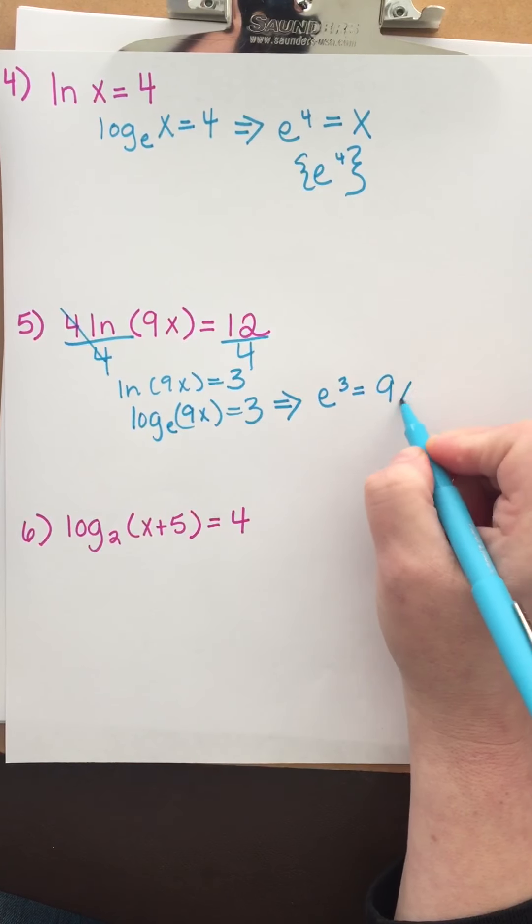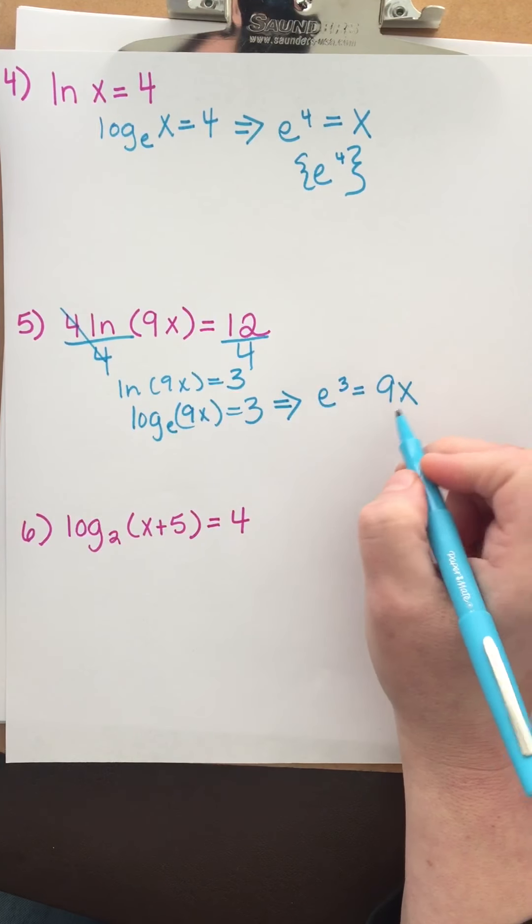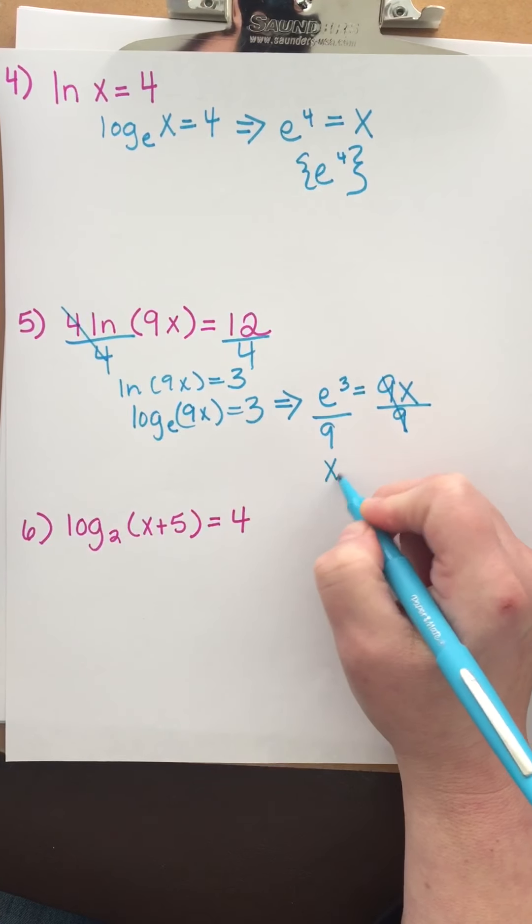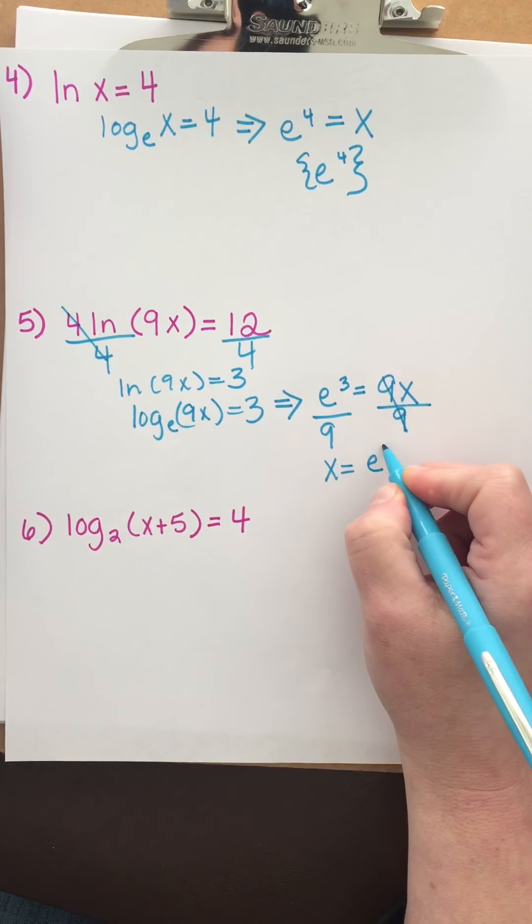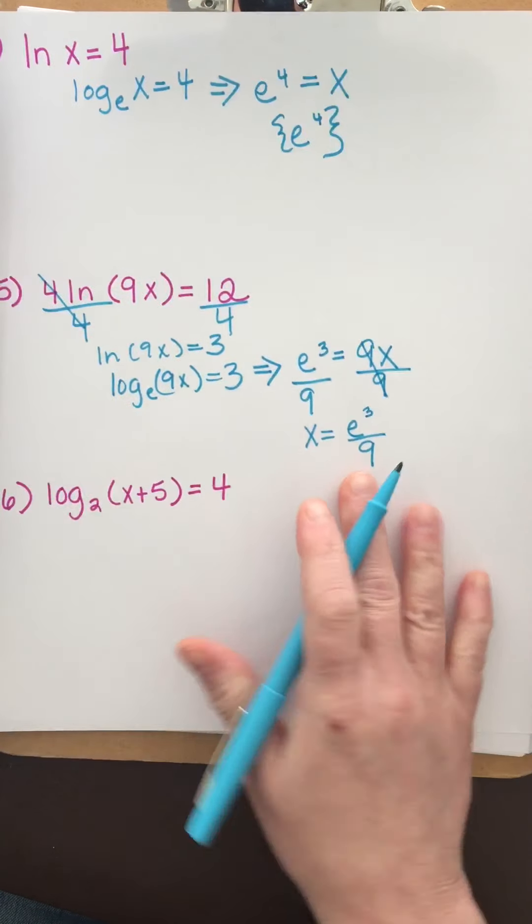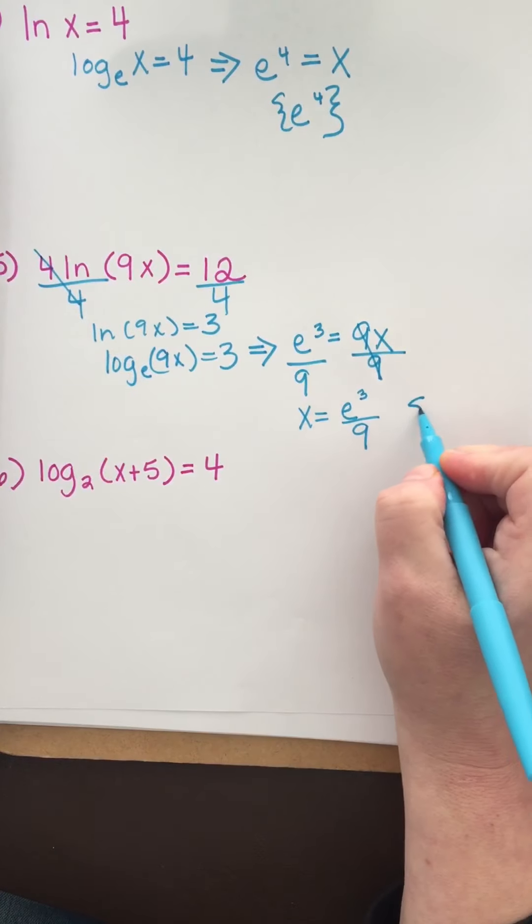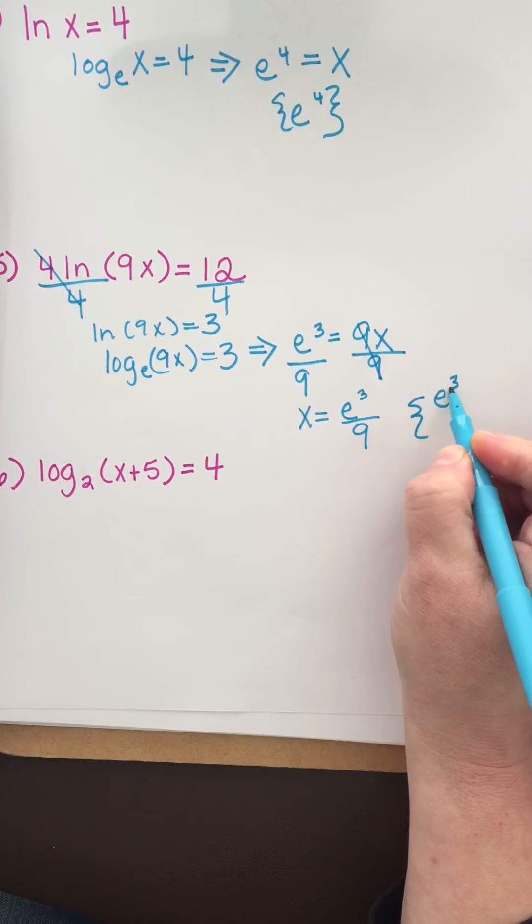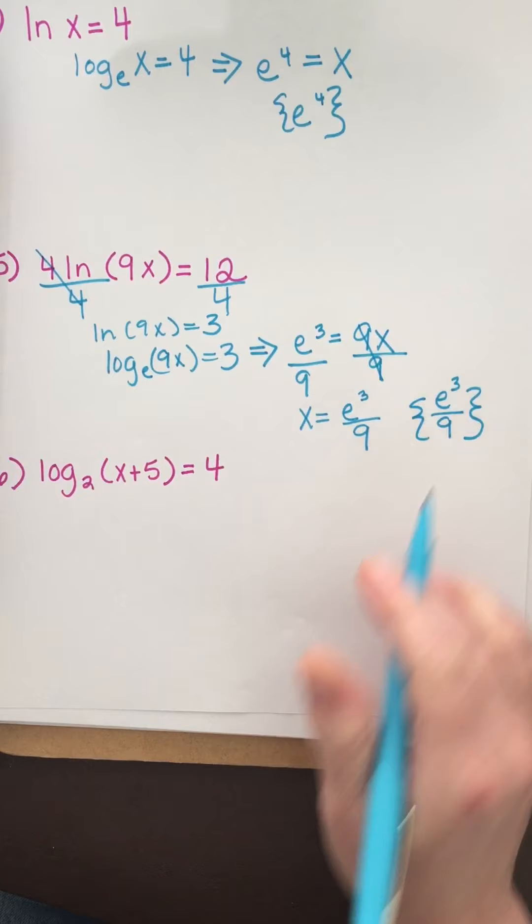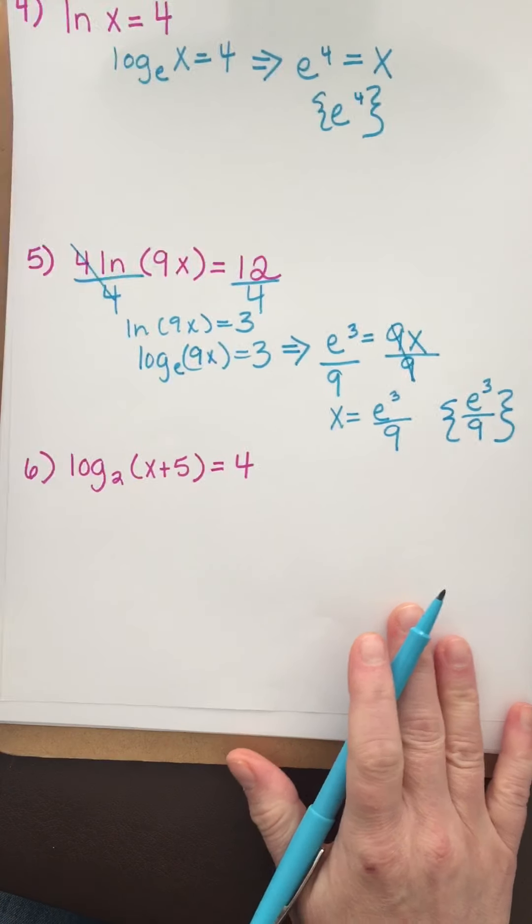equals 9x. To undo the multiplication by 9, we divide. So x equals e to the 3rd divided by 9. That's positive, so the solution is e cubed over 9. Remember, e is Euler's number.